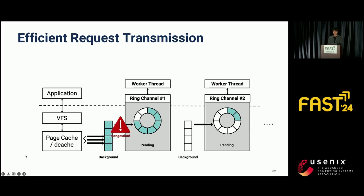However, this policy encounters challenges when integrated with RFuse's ring selection strategy. Since RFuse selects the ring channel based on core ID, a large number of asynchronous requests can overwhelm a single ring channel. Readahead is one example, generated by a single kernel thread in bursts. When congestion is detected on a ring channel, RFuse schedules incoming asynchronous requests across two different ring channels in a round-robin fashion. This distributes the load on the congested ring channel, maximizes utilization of multiple ring channels, and increases the overall throughput of background jobs.